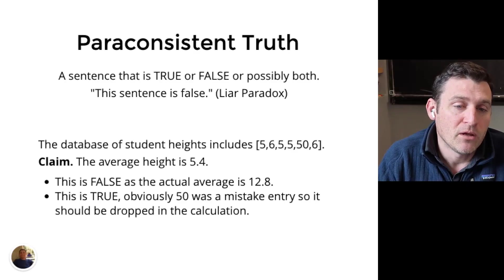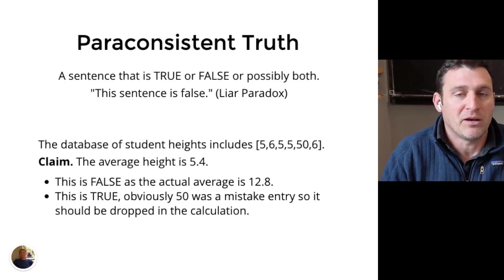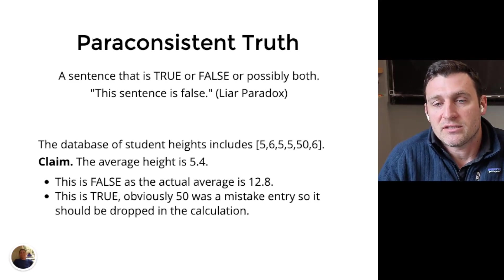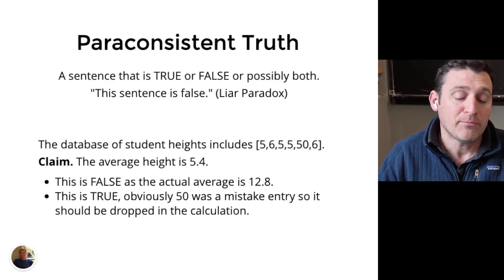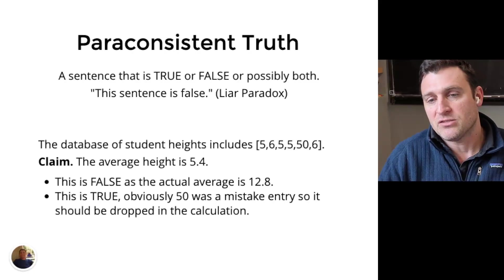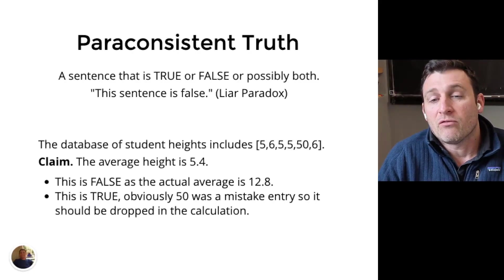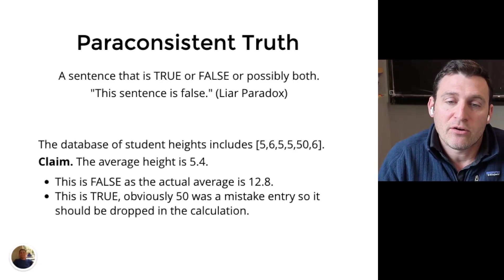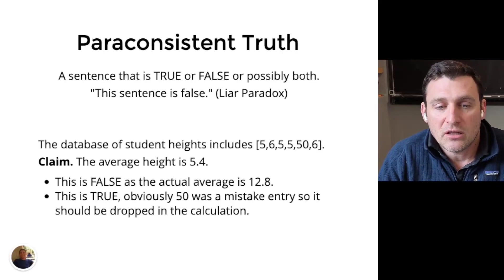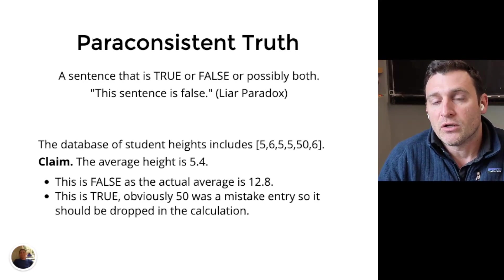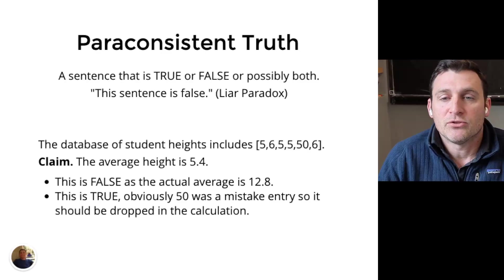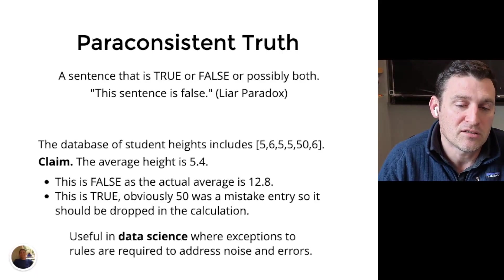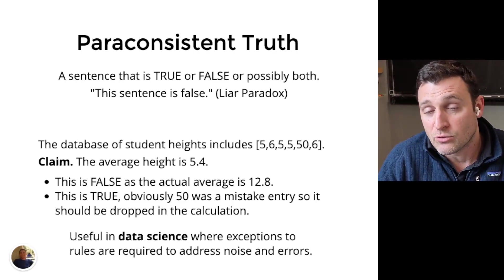So you could make the claim that this had to be false, that the real average is probably something like 12.8. However, the second view is that this is obviously meant to be excluding 50. If you look at the data, 50 as an outlier shouldn't have counted towards the average height, and that's why it wasn't computed in the average height of 5.4. Both of these perspectives have a bit of truth to them. Many situations in data science actually are modeled well by taking the perspective that perhaps your data is both true and false in some situations. If you include paraconsistent logic in your arsenal, you'll be able to include more story problems in your reasoning. It's great for modeling noise and errors.